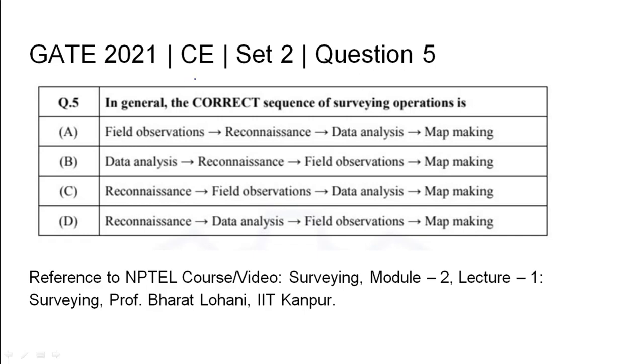GATE 2021 Civil Engineering Set 2, Question 5: In general, the correct sequence of surveying operations is - four options are given in a jumbled order of field observations, reconnaissance, data analysis, and map making. The relevant NPTEL reference has been listed.